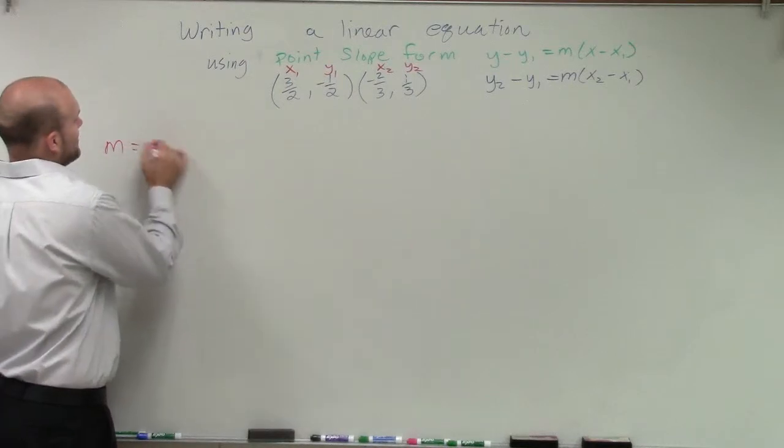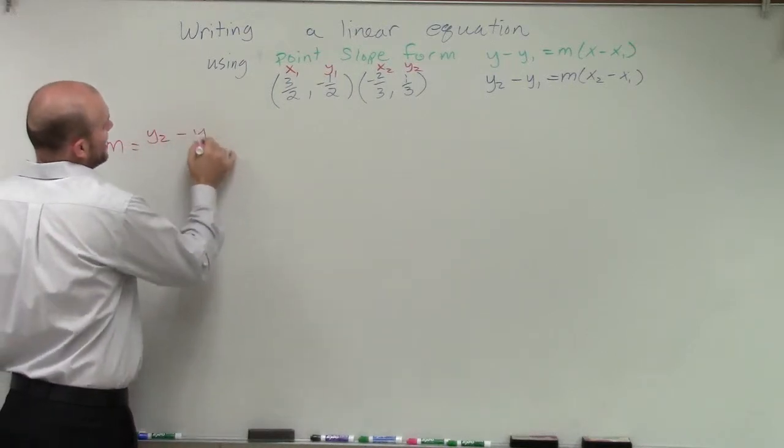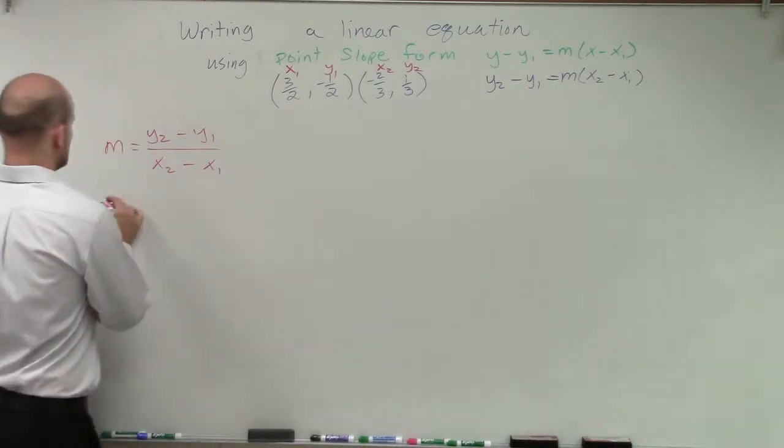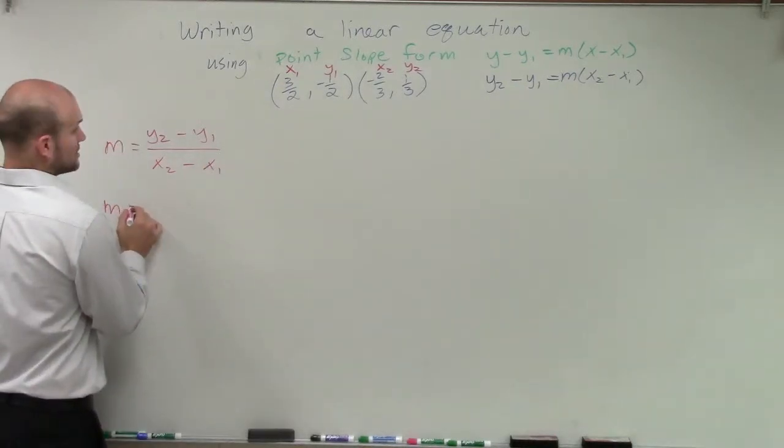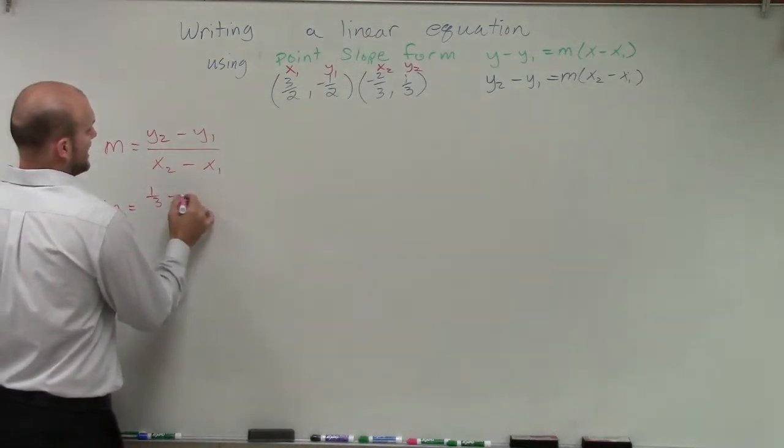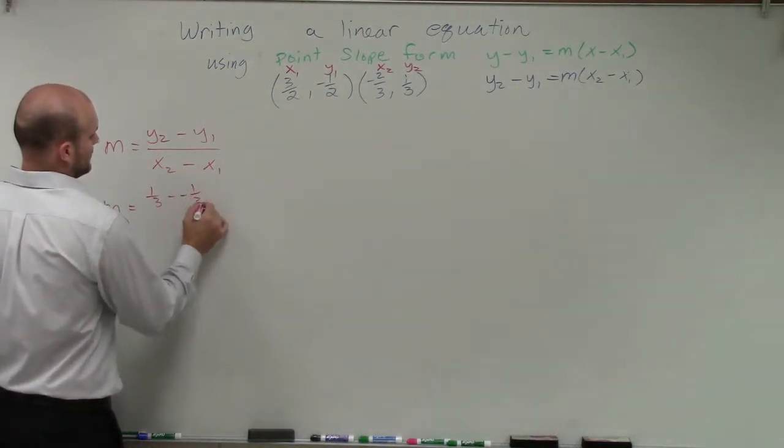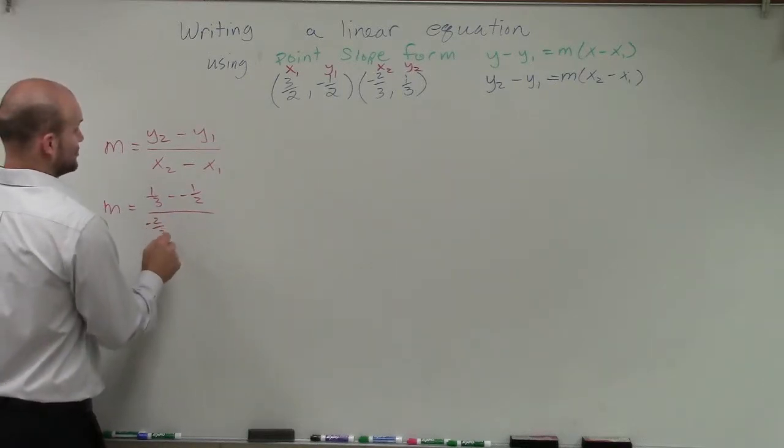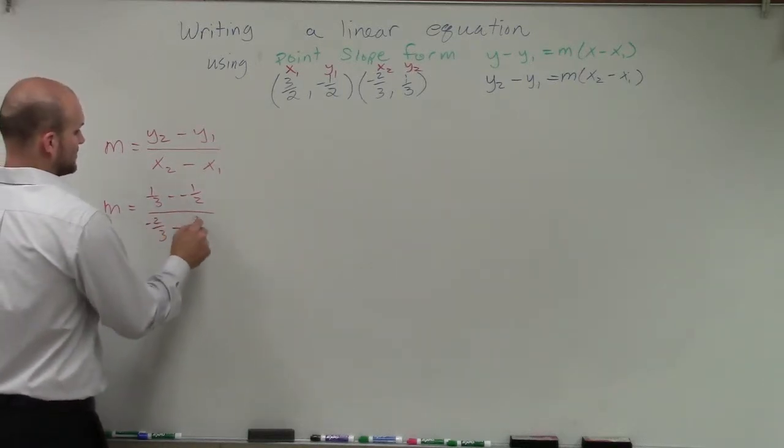So if I was going to find my slope, remember slope equation is y2 minus y1 over x2 minus x1. So I'm going to have m equals 1/3 minus negative 1/2 all over x2, which is negative 2/3 minus 3/2.